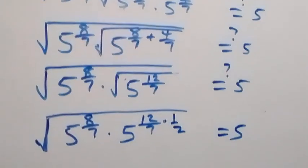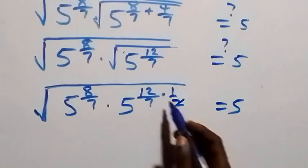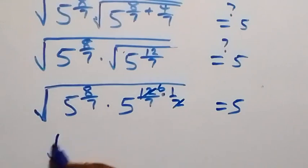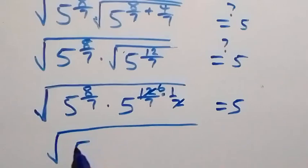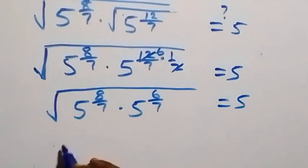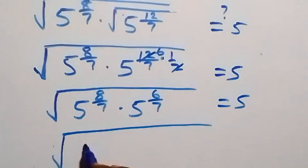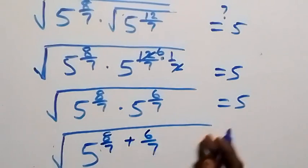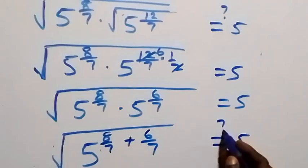That times half here equals 5. Then 12 over 7 times one half gives 6 over 7. So we have square root of 5 raised to power 8 over 7, then 5 raised to power 6 over 7, equals 5. Then we have square root of 5 raised to power 8 over 7 plus 6 over 7, equals 5.